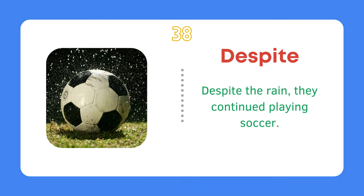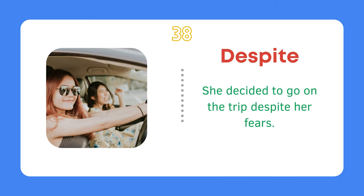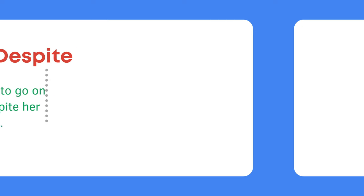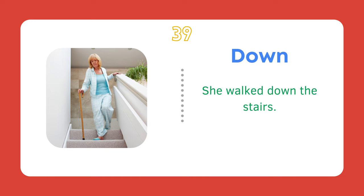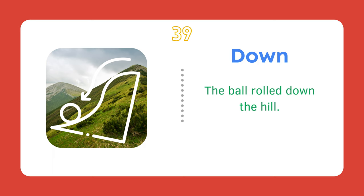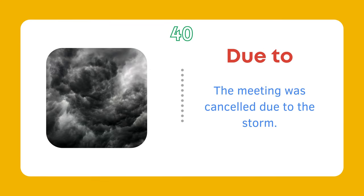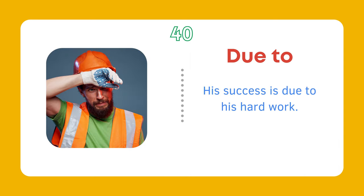Despite. Despite the rain, they continued playing soccer. She decided to go on the trip despite her fears. Down. She walked down the stairs. The ball rolled down the hill. Due to. The meeting was cancelled due to the storm. His success is due to his hard work.